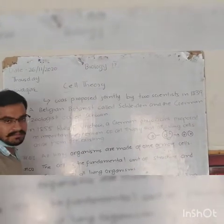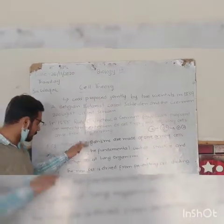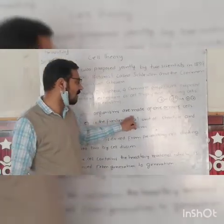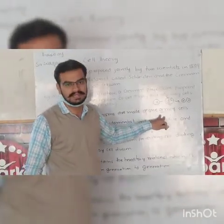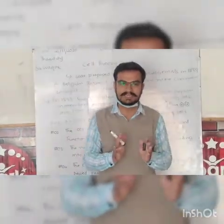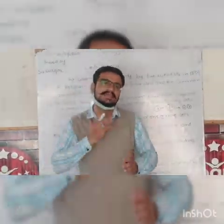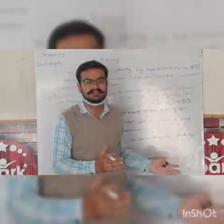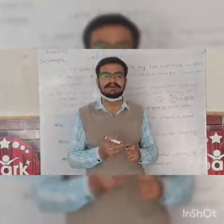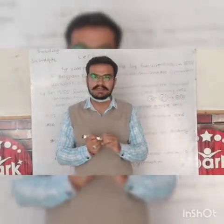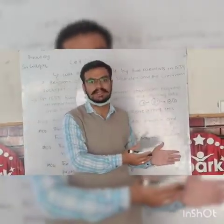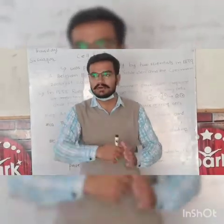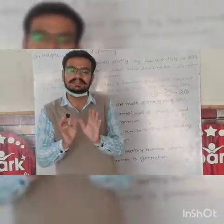There are four features of the Cell Theory. Number one: all organisms are made up of one or more cells. If a living organism is made up of one cell, we can say that it is unicellular. Bacteria are a good example of unicellular organisms.